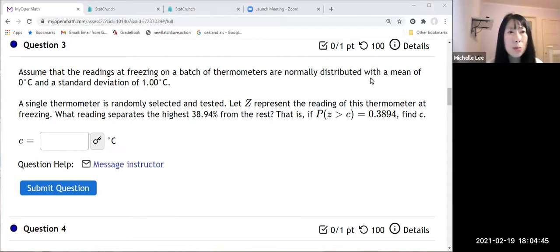So let me read this one. You can assume that the reading at freezing on a batch of thermometers are normally distributed with a mean of zero degrees Celsius and standard deviation of one degree Celsius. A single thermometer is randomly selected and tested.